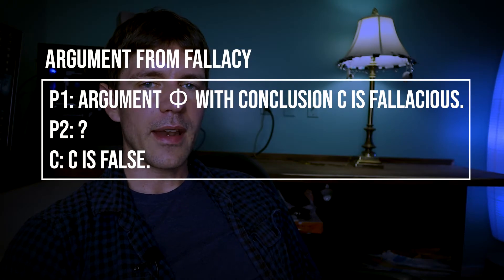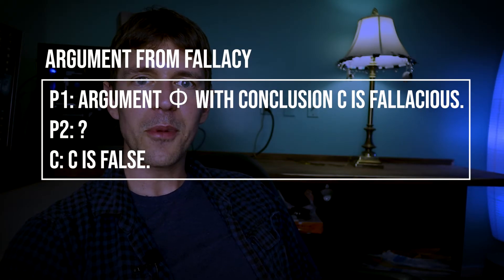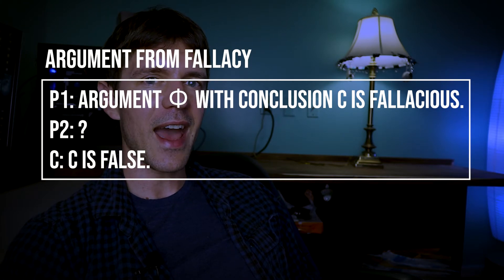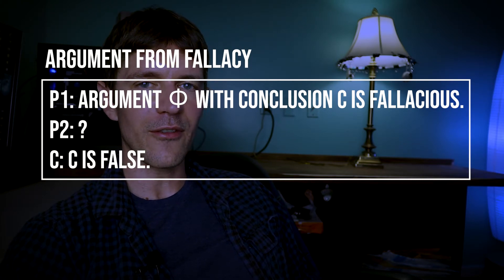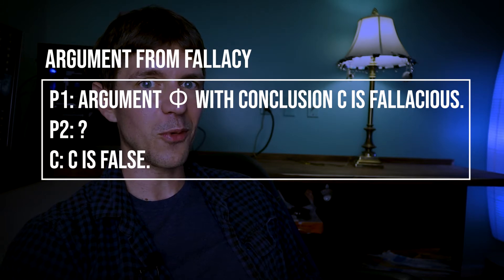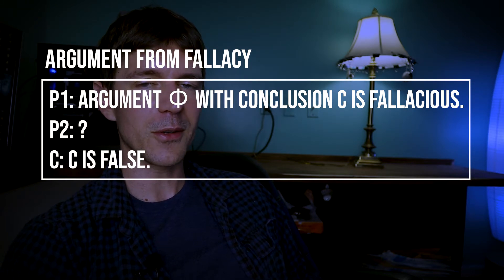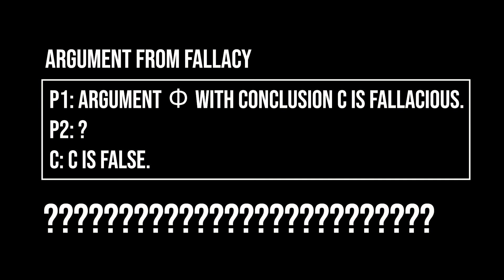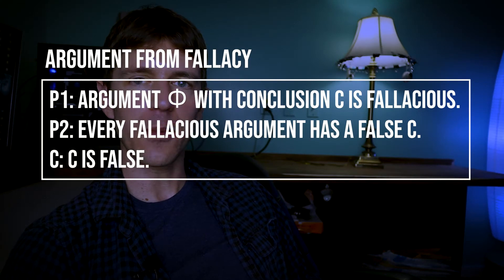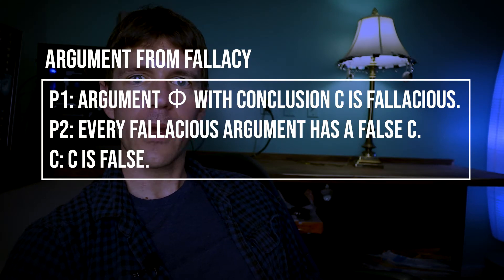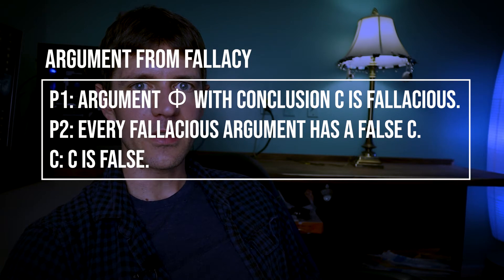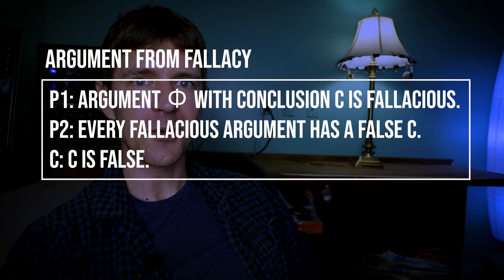We can make this argument valid by adding a missing premise. Pause the video and see what premise we would need to add in order to make the argument valid — that is, what would make it so that if the premises were true, the conclusion would also be true. Welcome back. The premise you would need to add is that every fallacious argument has a false conclusion. But this premise would be demonstrably false — there are plenty of fallacious arguments that have true conclusions.